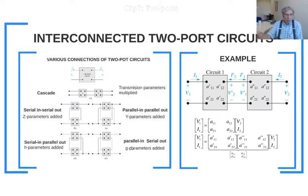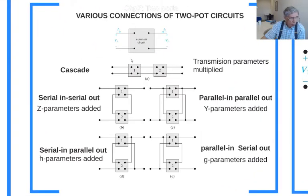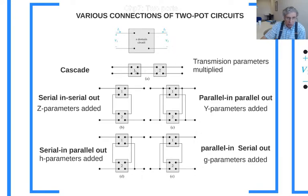What we're going to see here: if you have more than two two-ports — let's say two two-ports — and you know the definition relation of those two, when they are connected in cascade, what would be the new two-port definition relation? We know the definition relation of each one, and we connected those two in cascade, so what is the definition relation now of this new circuit?